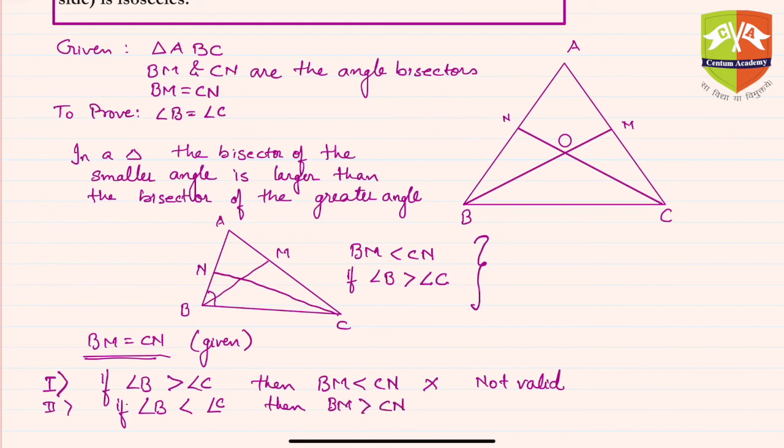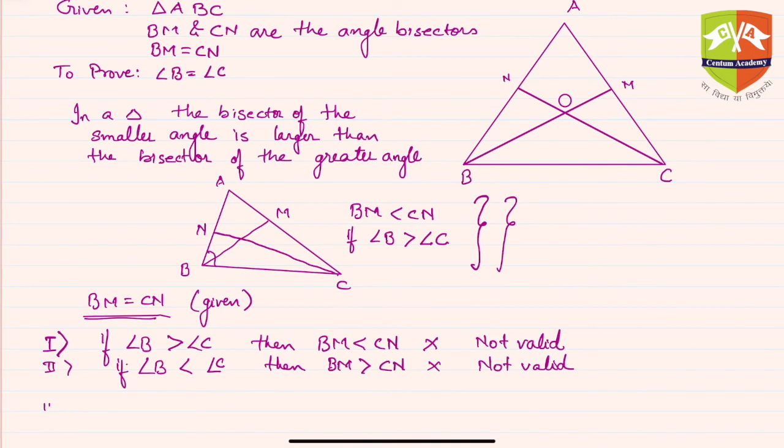Correct, by the same logic which we proved. But this is also not valid because we know that the given thing is that BM is equal to CN.